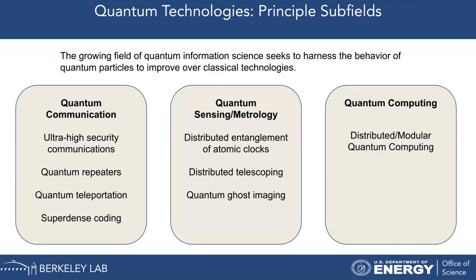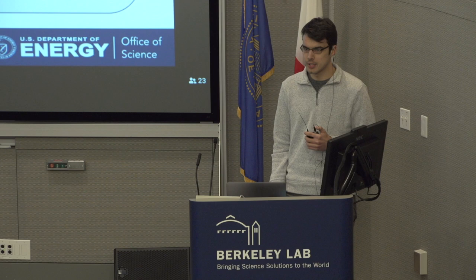First, I want to give you a quick introduction to the field of quantum information science. This field is frequently subdivided into three main categories: quantum communication, which includes applications like ultra-high security communication; quantum sensing and metrology, which explores how we can use quantum properties of particles to do better, more precise measurements; and quantum computing, which looks to use quantum particles to achieve more efficient or faster algorithms for certain classifications of problems.